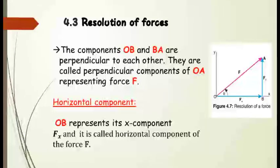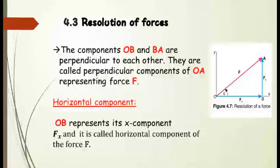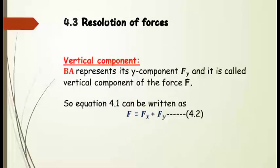Now we have horizontal and vertical components. The horizontal component is along the x-axis — in the figure, line OB represents the x component, that is fx, and it is called the horizontal component of force F. The vertical component in the figure is BA, which represents the y component, that is fy, and it is called the vertical component of force F.